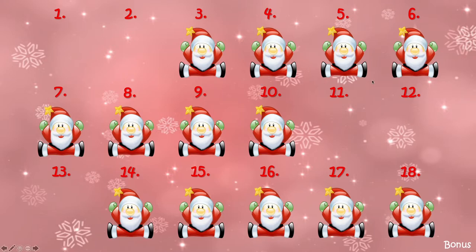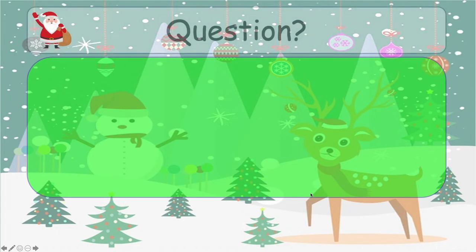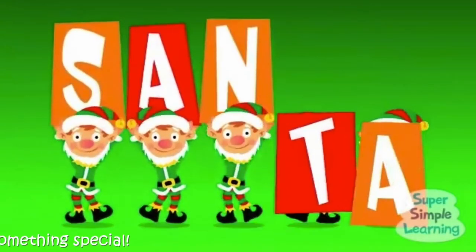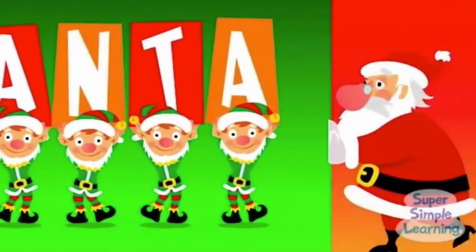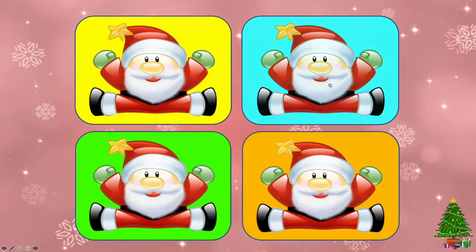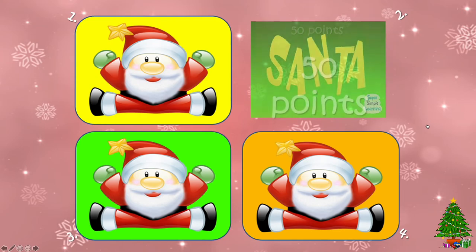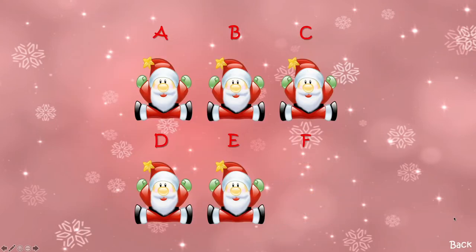There is a bonus round — let's choose one. You can click on A, B, C, D, E, or F, and it will take you to extra questions. Question and answer — it's a template. There's also an extra choice slide inside the bonus round. Clicking on the sky blue Santa reveals 50 points. After that, click on the Christmas tree to go back to the main slide for the bonus round.